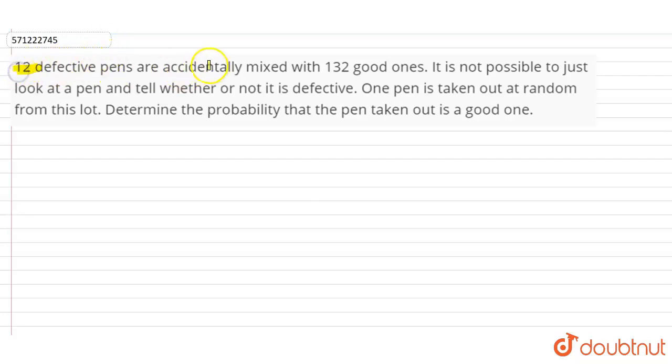12 defective pens are accidentally mixed with 132 good ones. It is not possible to just look at a pen and tell whether or not it is defective. One pen is taken out at random from this lot. Determine the probability that the pen taken out is a good one.